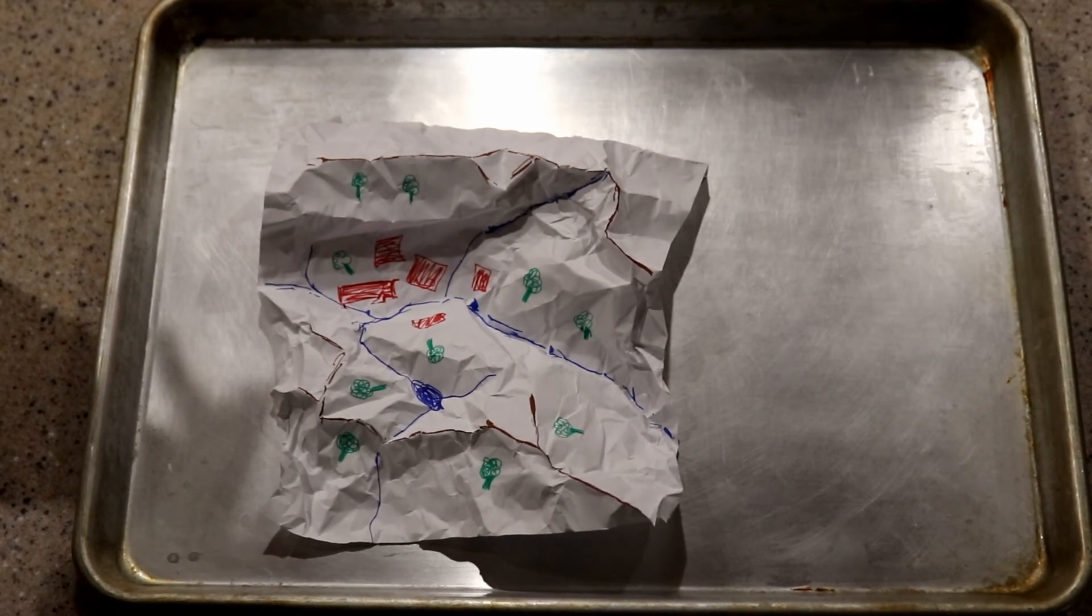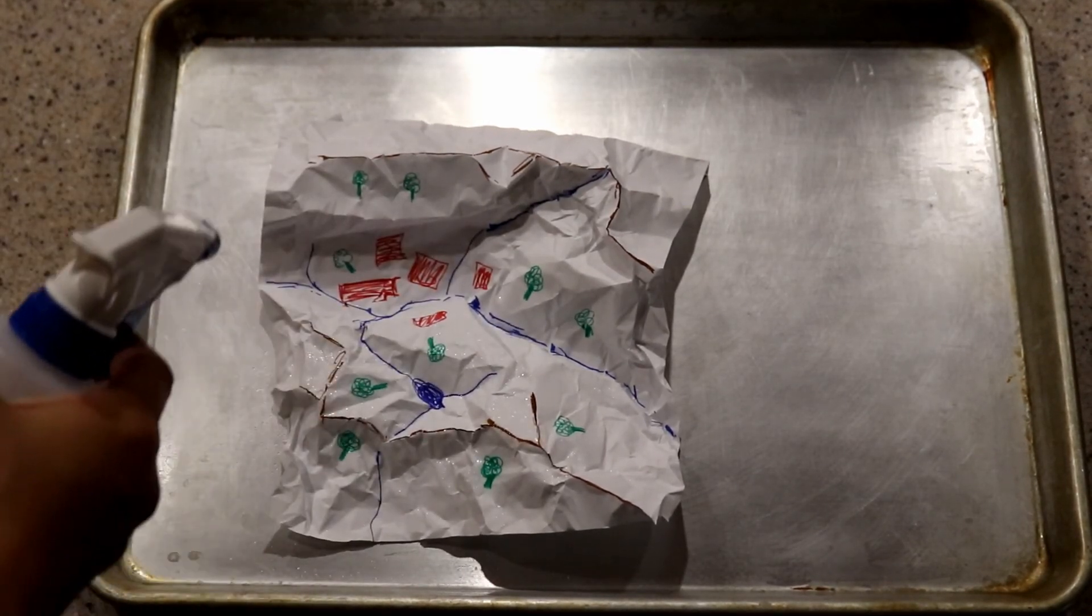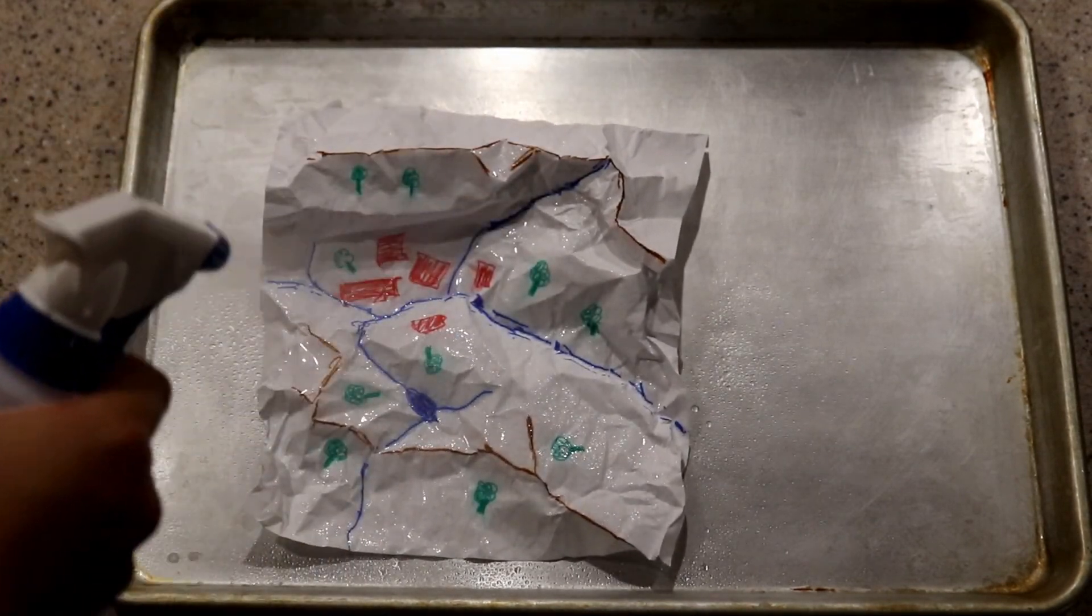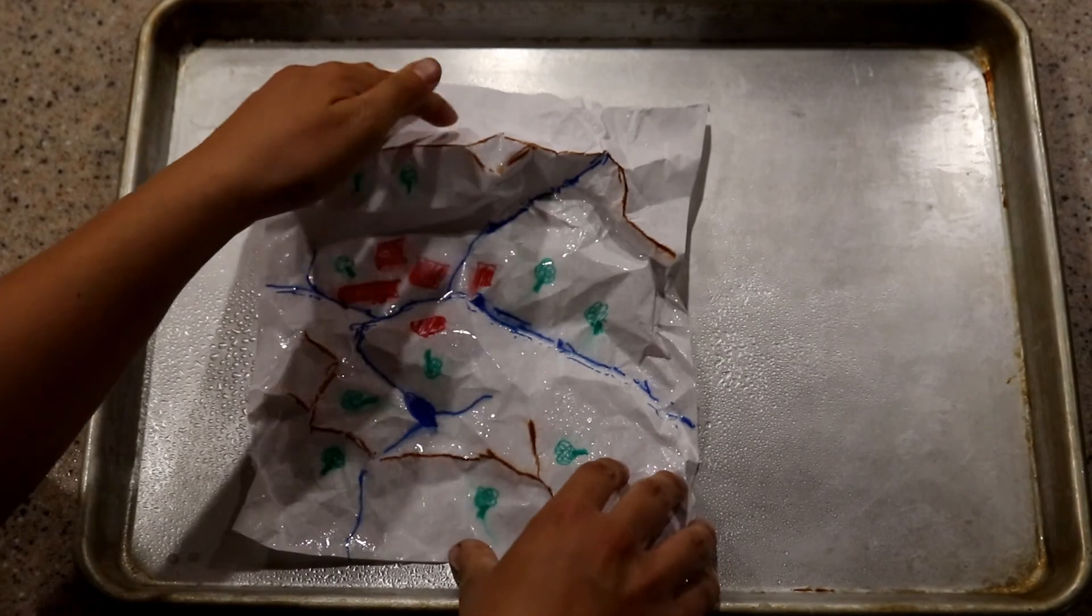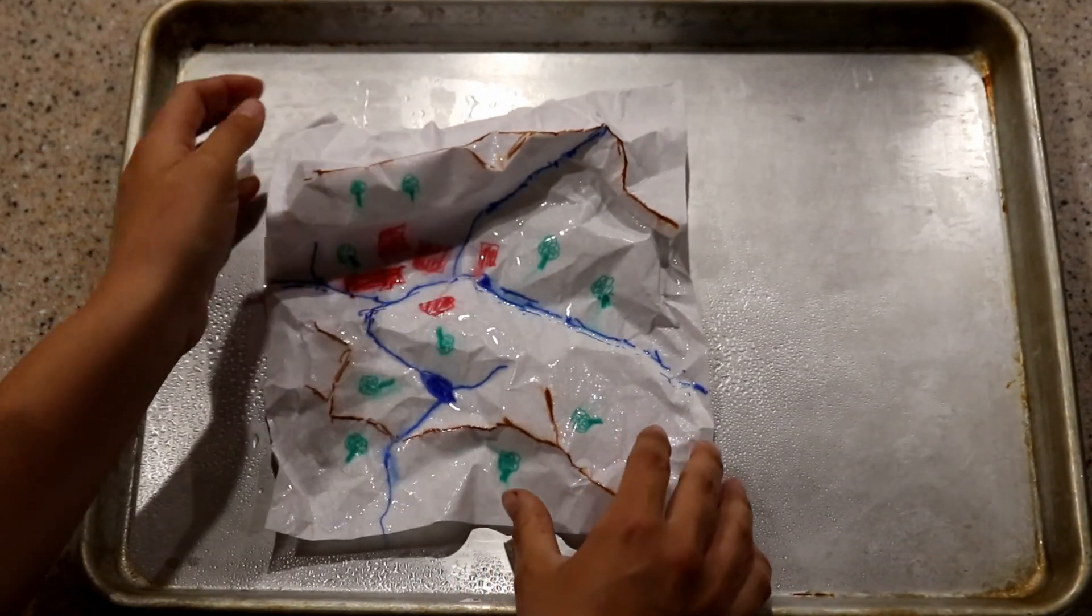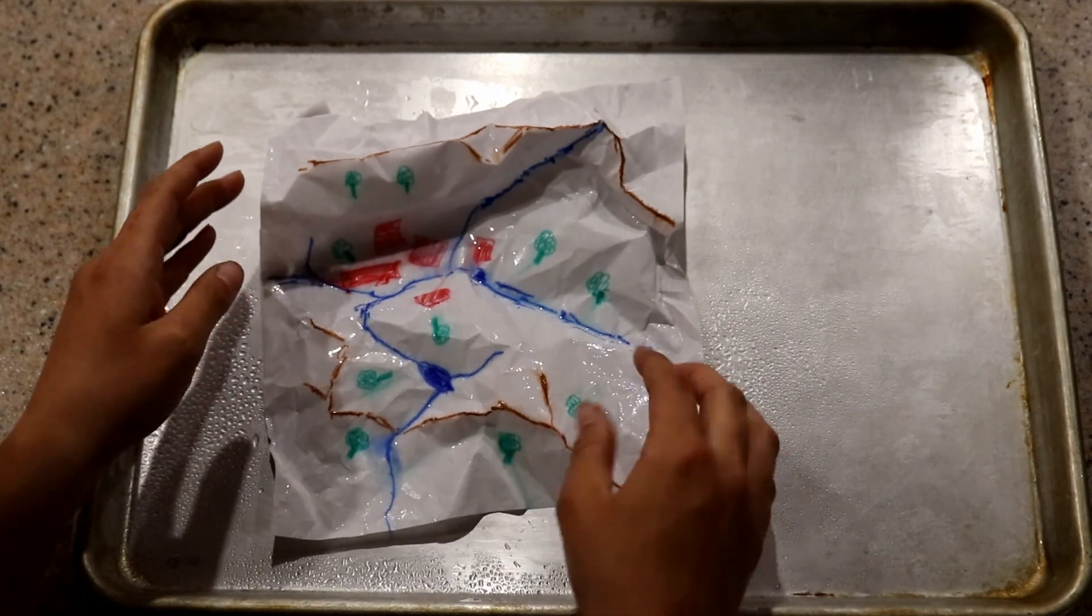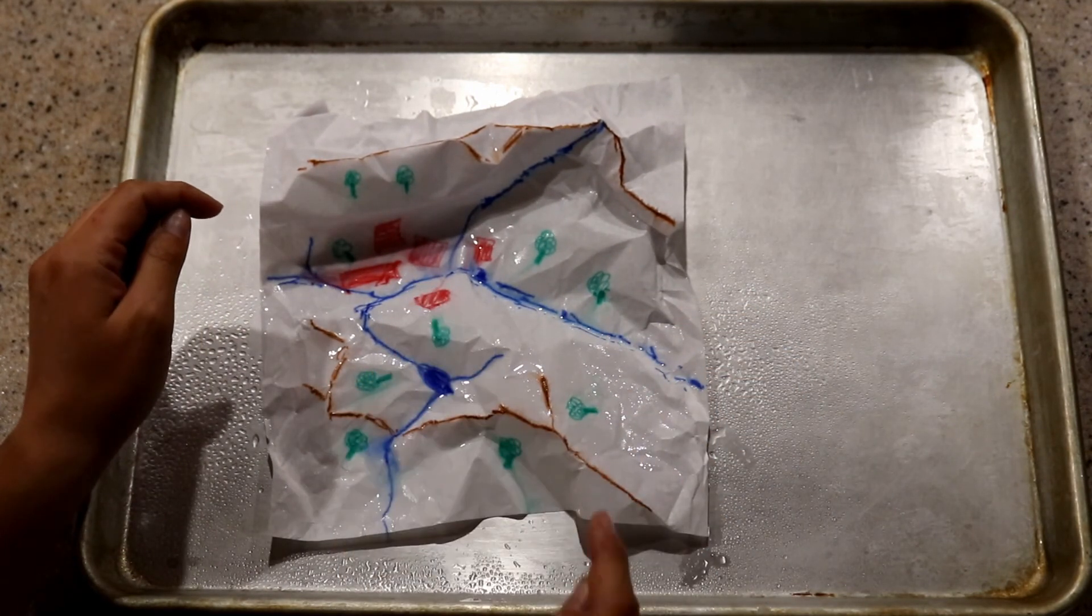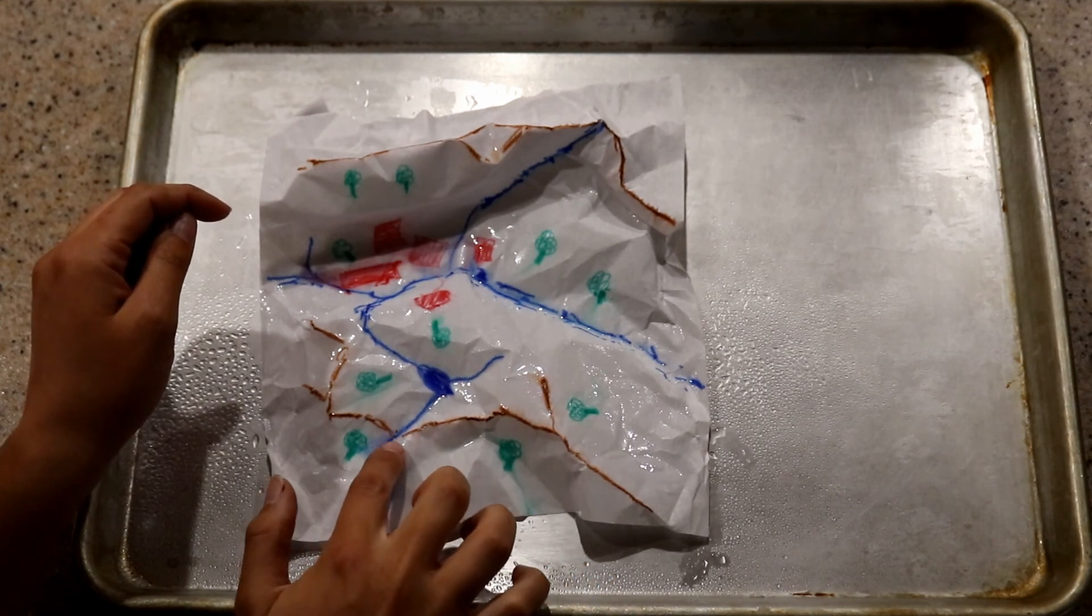So now we're gonna have it rain. So we take our spray bottle and we spray just like this. And we're gonna watch what the water is doing. You can see a lot of this green running into the blue. You see a lot of this red running into there as well. You can see some of this brown pooling in there.